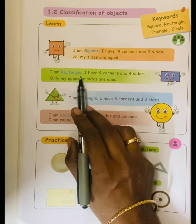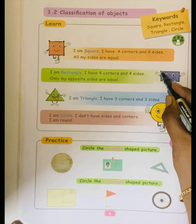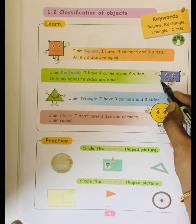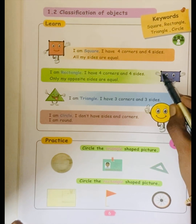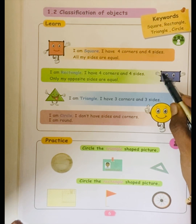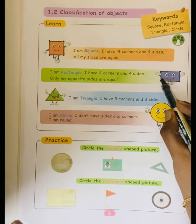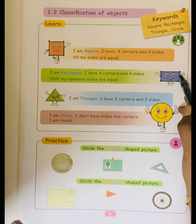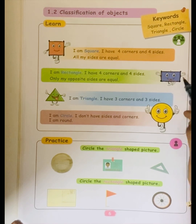Next one: I am a rectangle. Rectangle has four corners — one, two, three and four. How many sides? Four sides — one, two, three and four. Only opposite sides are equal: these two sides are equal and those two sides are equal. That is, opposite sides are equal.